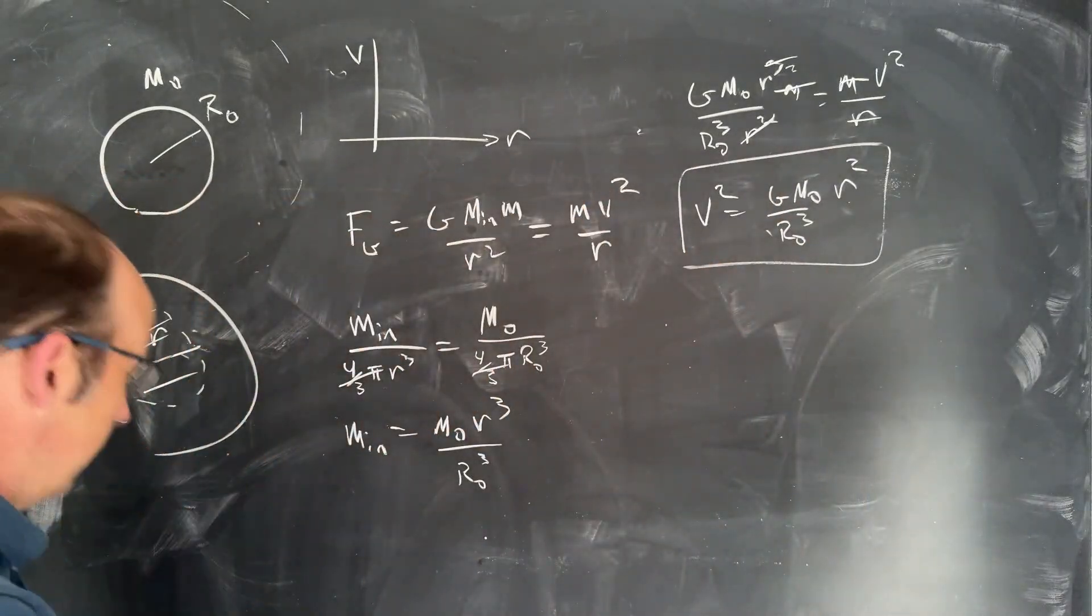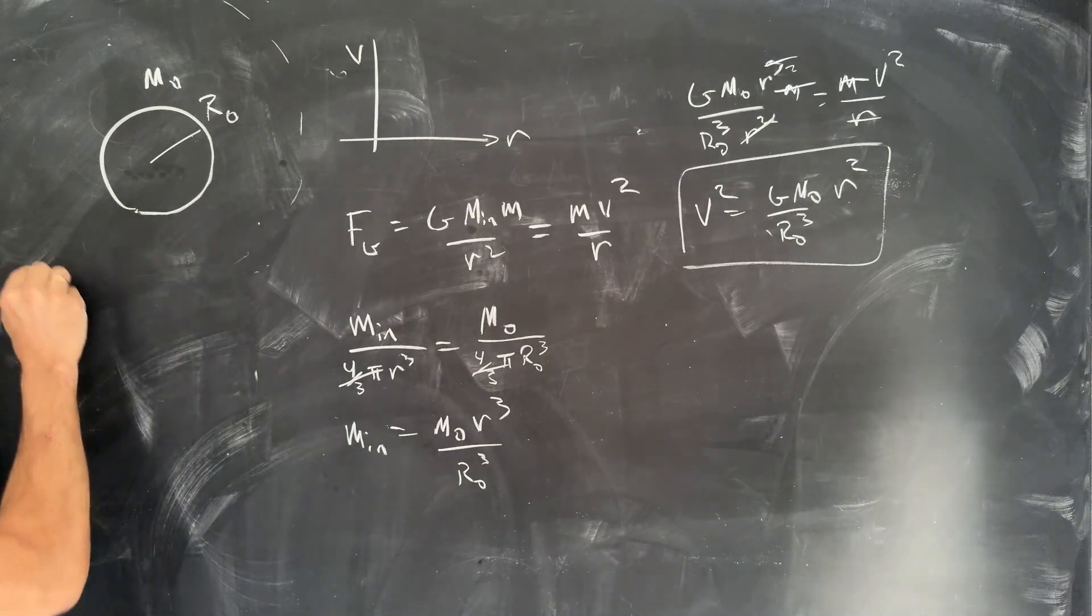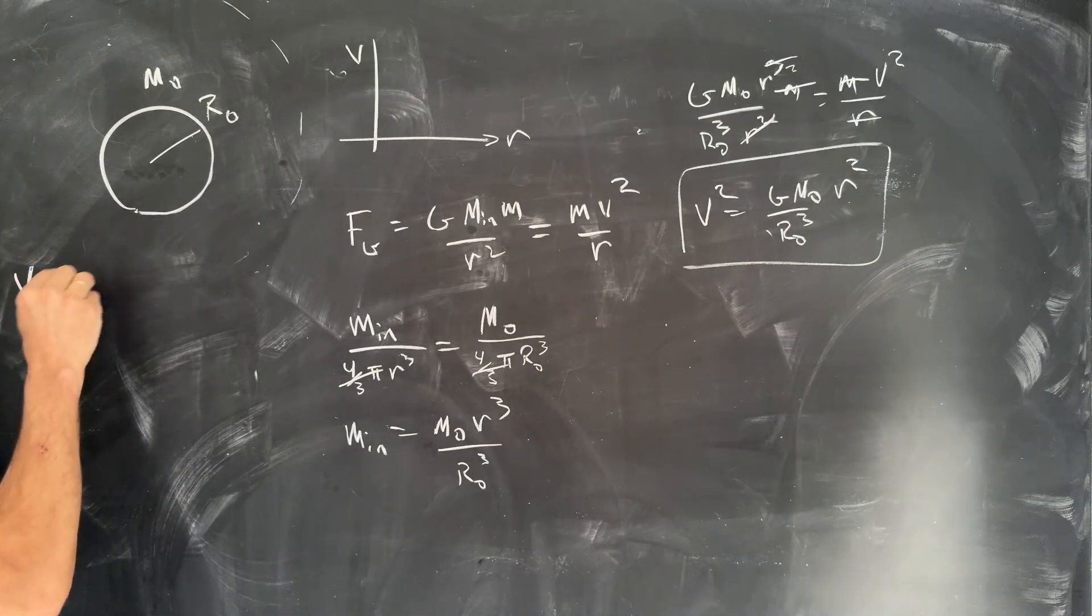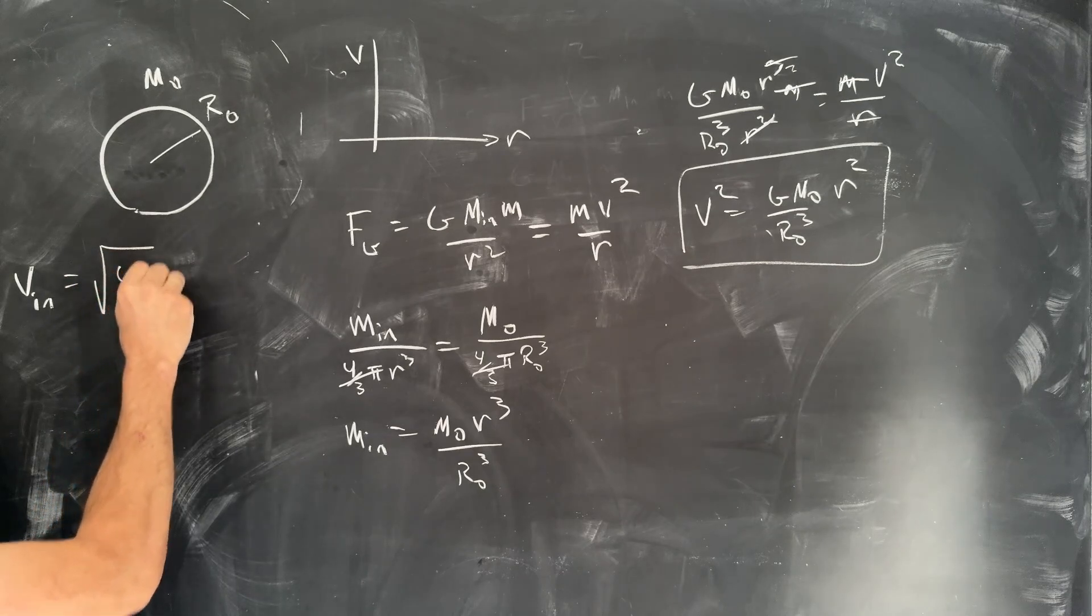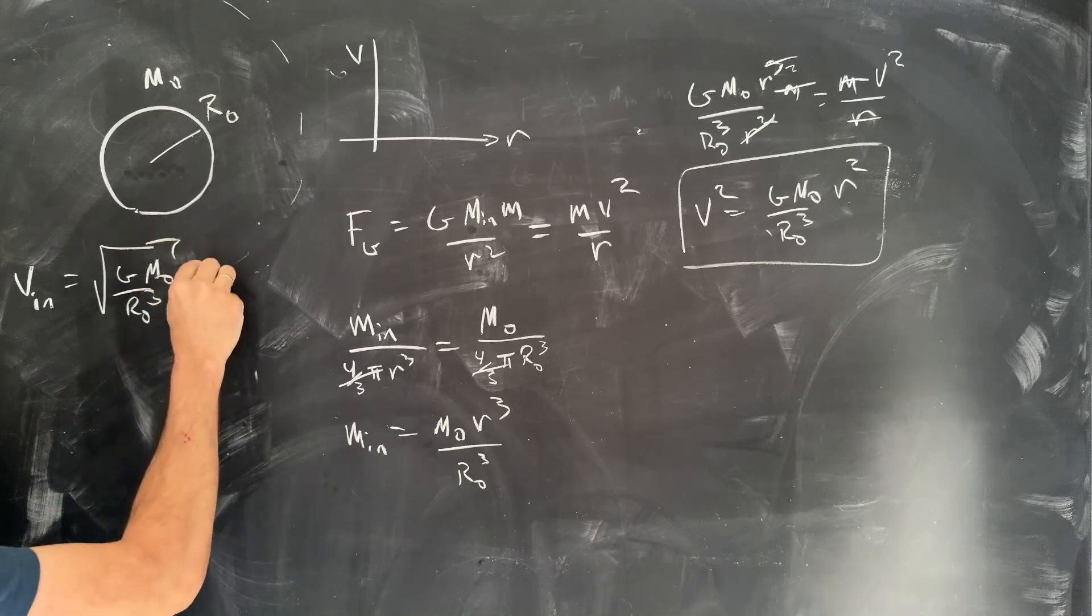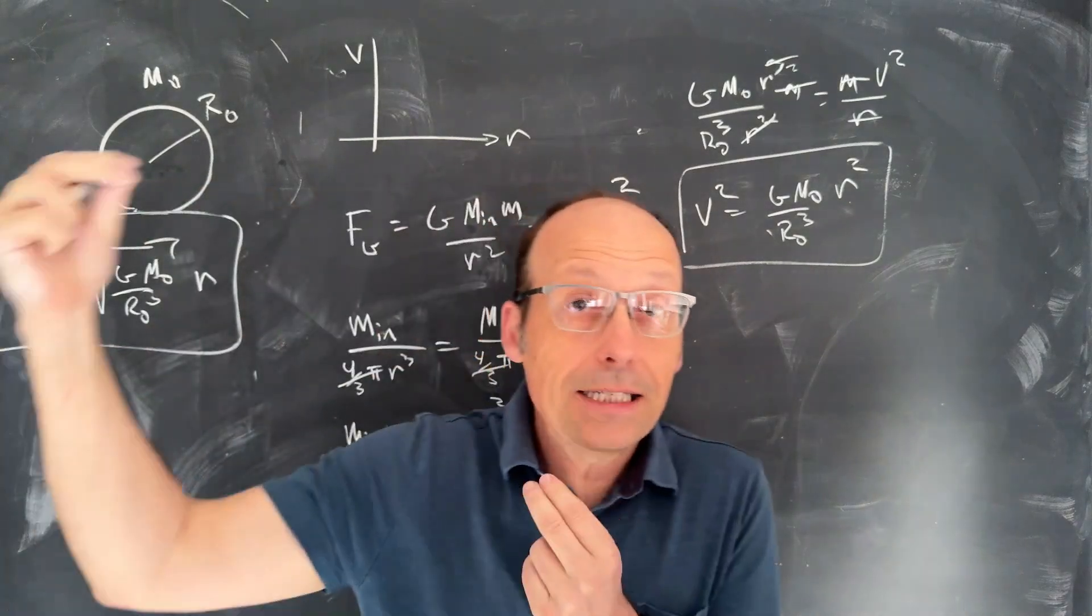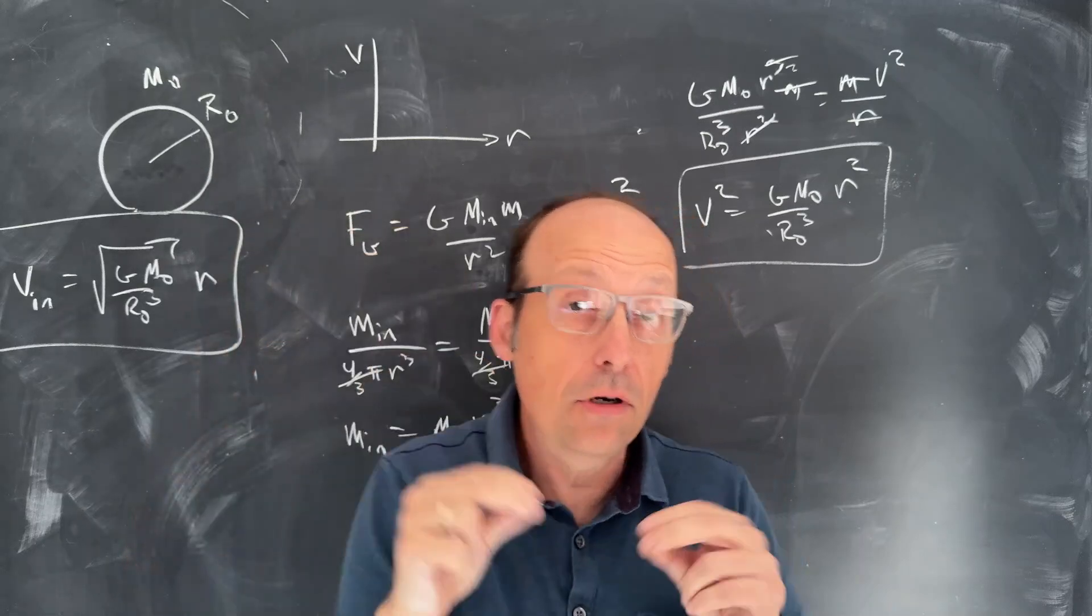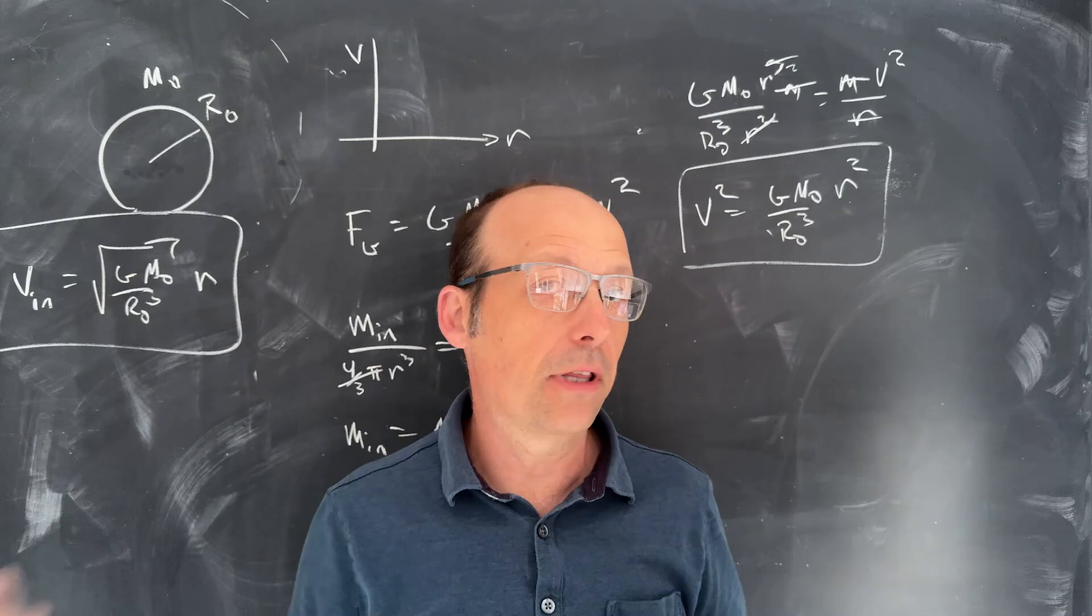And let's go ahead and write v as a function of r, so I'll just have to take the square root. I'm going to call this v_inside. It's going to be the square root of G m0 over r0³ times r. So that says that as I get towards the galactic center, my orbital velocity goes to zero, and it increases linearly.